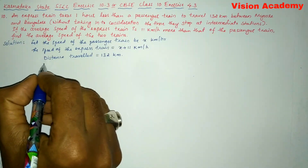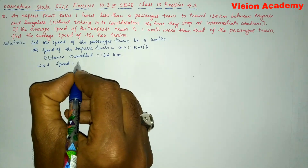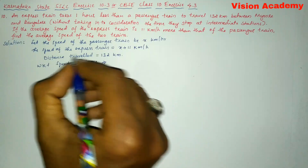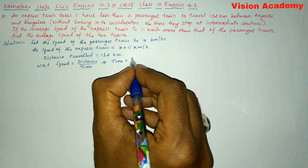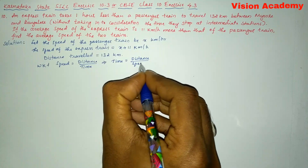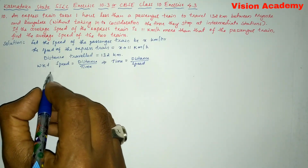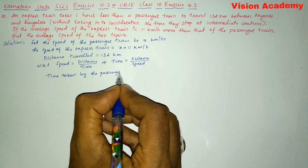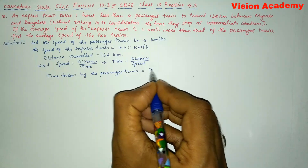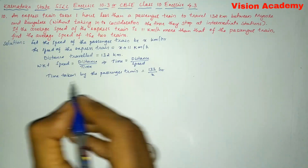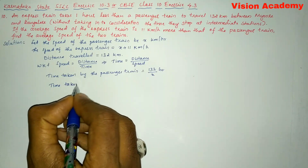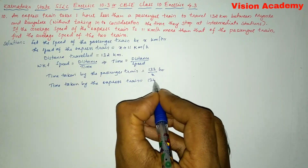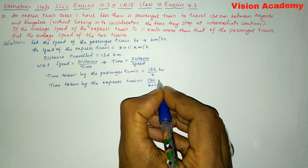We know that speed is equal to distance by time. If we want to find time, we rearrange to get time is equal to distance divided by speed. So the time taken by the passenger train is equal to 132 divided by x hours, and the time taken by the express train is equal to 132 divided by x plus 11 hours.